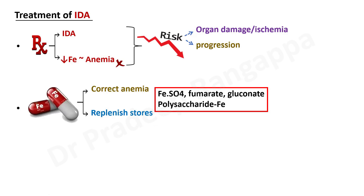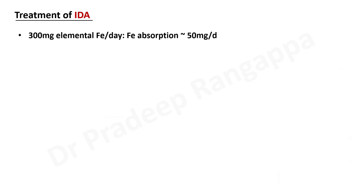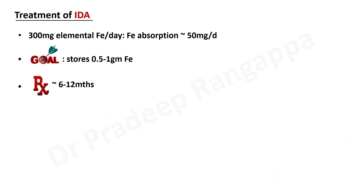The purpose of supplementation is to replenish the iron stores reflected by ferritin. For stable patients, any of the oral iron formulations can be used, though this may not apply to ICU patients. Treatment should be continued for 6 to 12 months with oral formulations. About 15 to 20% of patients develop GI disturbance, and compliance can be an issue with oral formulations. In ICU patients with cardiovascular instability or heart failure, blood transfusion is something to consider in acute situations.